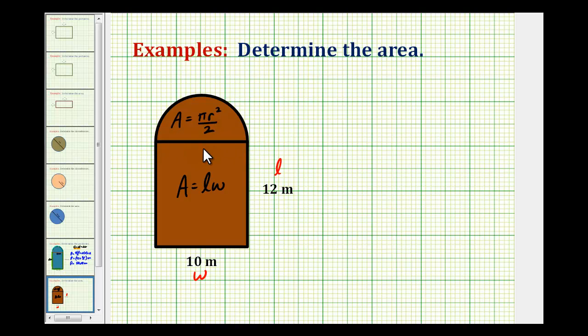And we know the length of this segment here is 10 meters, and the radius would be half of this length, the distance from here to here, which would be five meters.